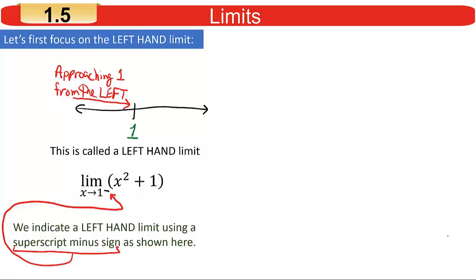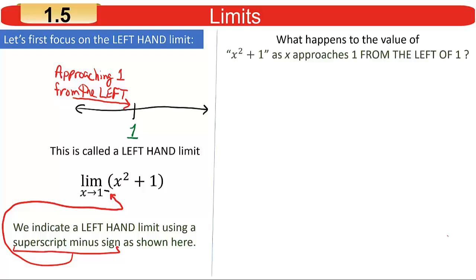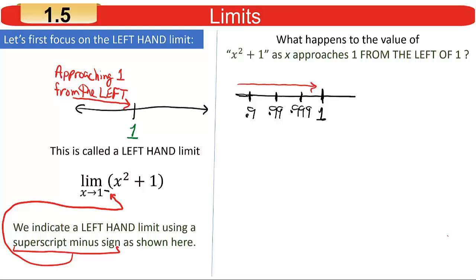Let's look at each type of limit individually. Starting with the left-hand limit, I'm interested in what happens to x squared plus 1 as x approaches 1 from the left. Think of values fairly close to but smaller than 1, getting closer and closer: 0.9 is less than 1; 0.99 is less than 1 but closer to 1; and you could keep adding nines — 0.999 is close to 1 from the left but closer than 0.99.